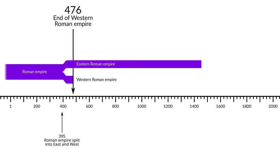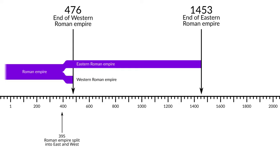So we have 476, which is the old traditional date for the fall of Rome. And then there's 1453, which is basically the real date for the fall of Rome, because that's when the historical Roman Empire that was founded by Caesar Augustus really was over — in 1453.